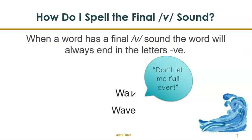So how do I spell the final V sound? When a word has a final V sound, the word will always end with the letters V-E. So look at the example below. Wave.